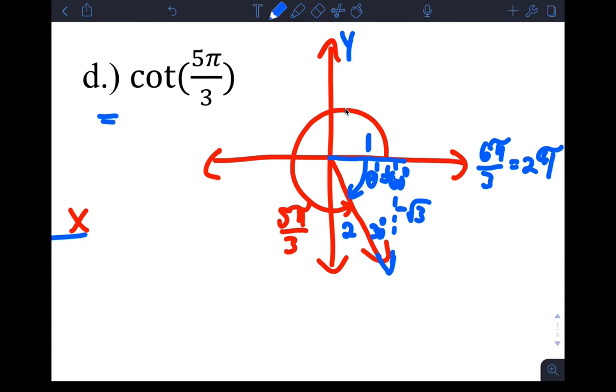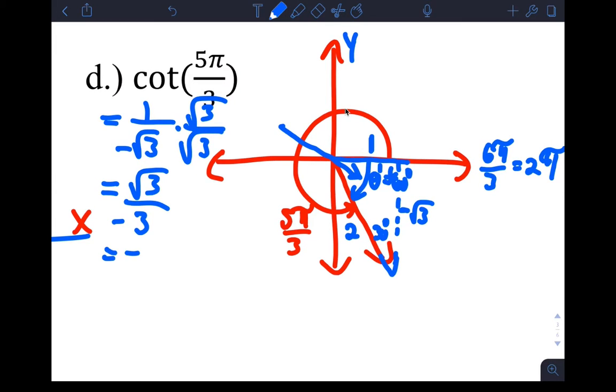So the answer to the question cotangent of five pi over three, looking at it from the perspective of a reference angle and constructing a little triangle there in the fourth quadrant, you just get cotangent, which is adjacent over opposite, which is one over negative root three. We can't leave it like that, we rationalize by multiplying root three top and bottom, so you get root three over negative three, or negative root three over three, something like that. That's how you do the reference angles.